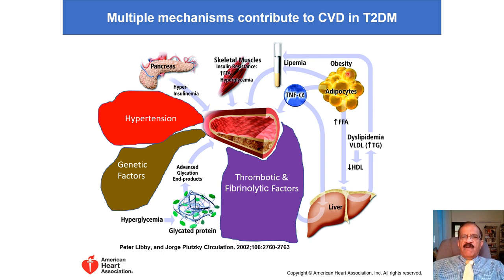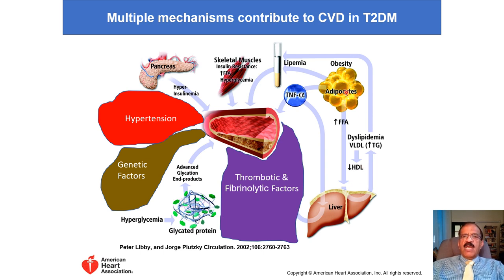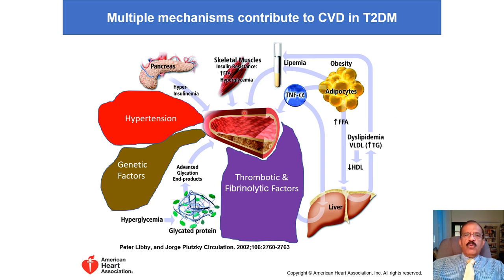Adipocytes release free fatty acids, which the liver converts into VLDL and triglycerides, causing increased serum VLDL and triglycerides. This also reduces HDL levels. Since HDL is protective — it brings LDL back to the liver, lowering LDL levels — low HDL means higher LDL, further contributing to atherosclerosis.